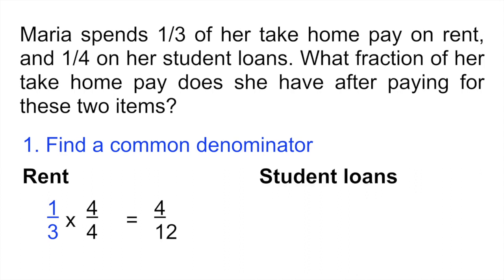And then if we look at the student loans, we said that she pays one-fourth of her take-home pay on student loans. So how do we get a common denominator for this? Well, we would multiply the top number, the numerator, and the bottom number, the denominator, by three. And that would give us three over twelve.